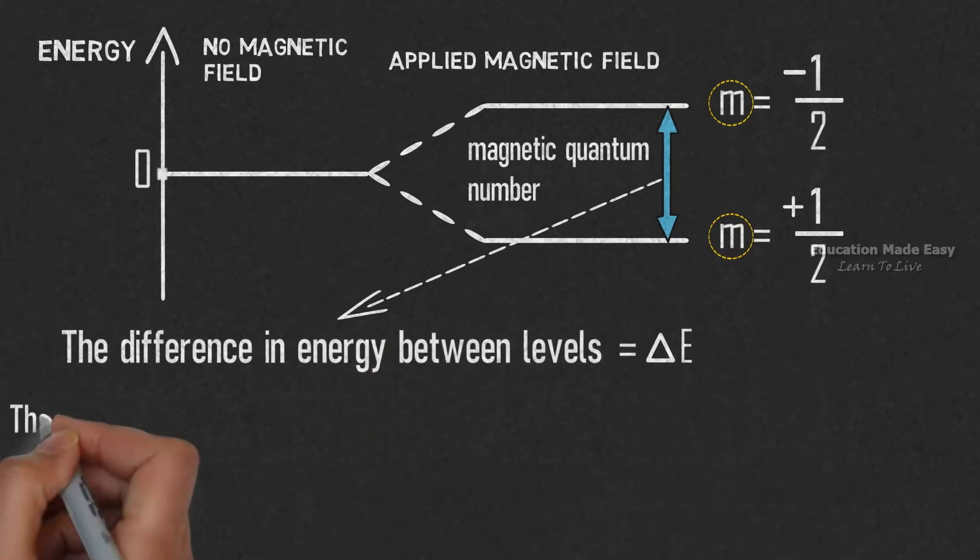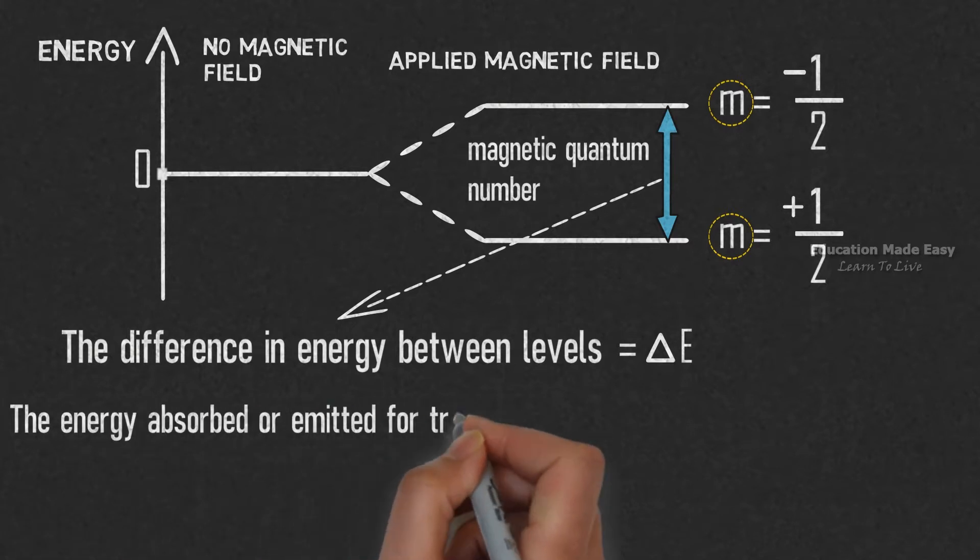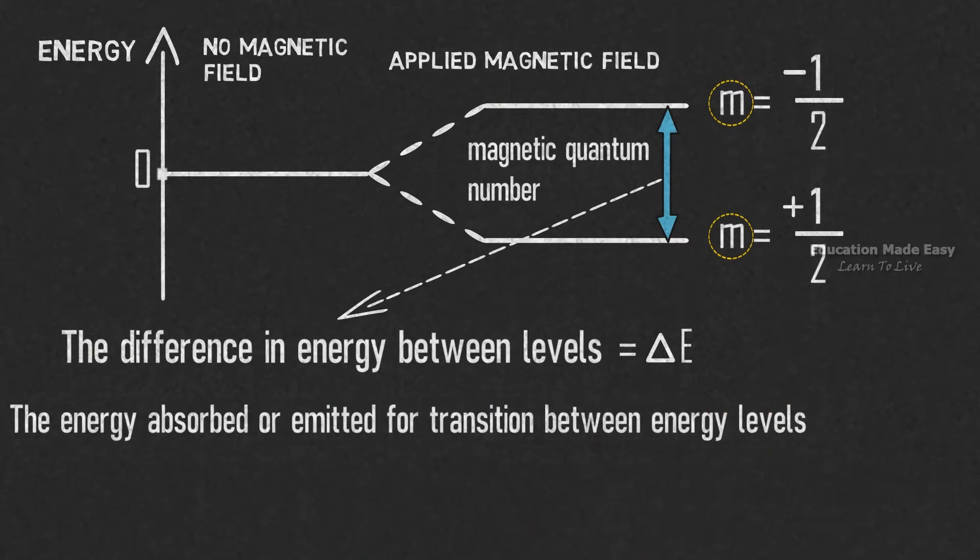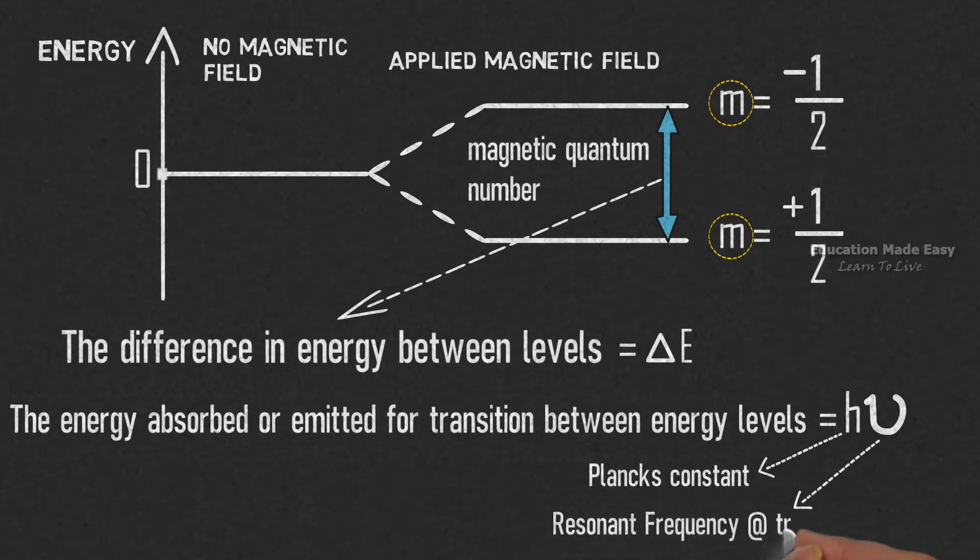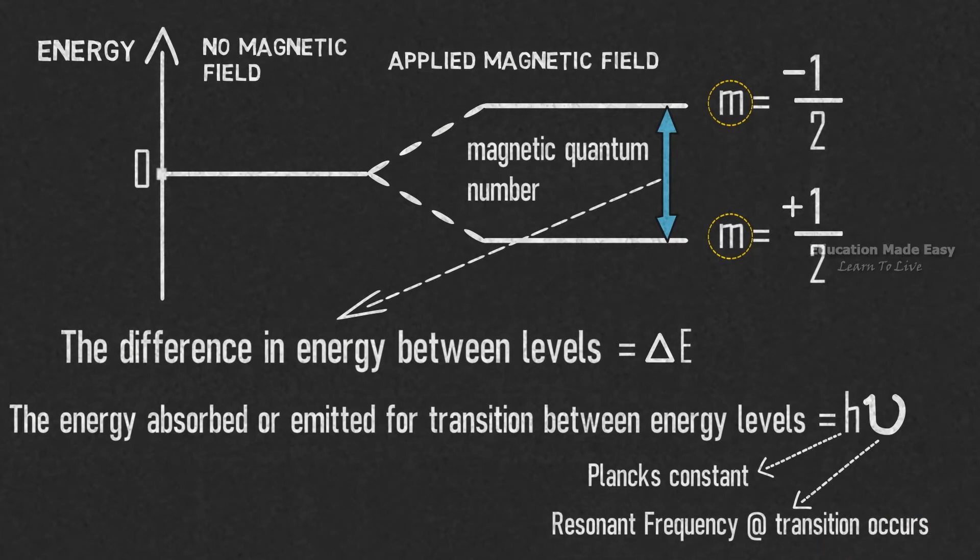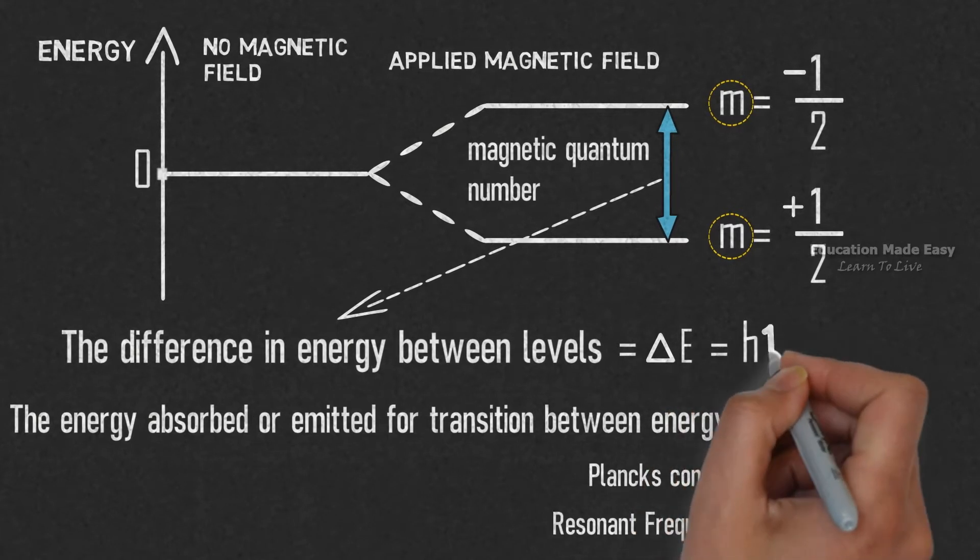We also know that the energy absorbed or emitted for transition between energy levels is equal to hν, where h represents Planck's constant and ν represents resonant frequency at which transition occurs. So we can write ΔE is equal to hν. Let us pin this equation.